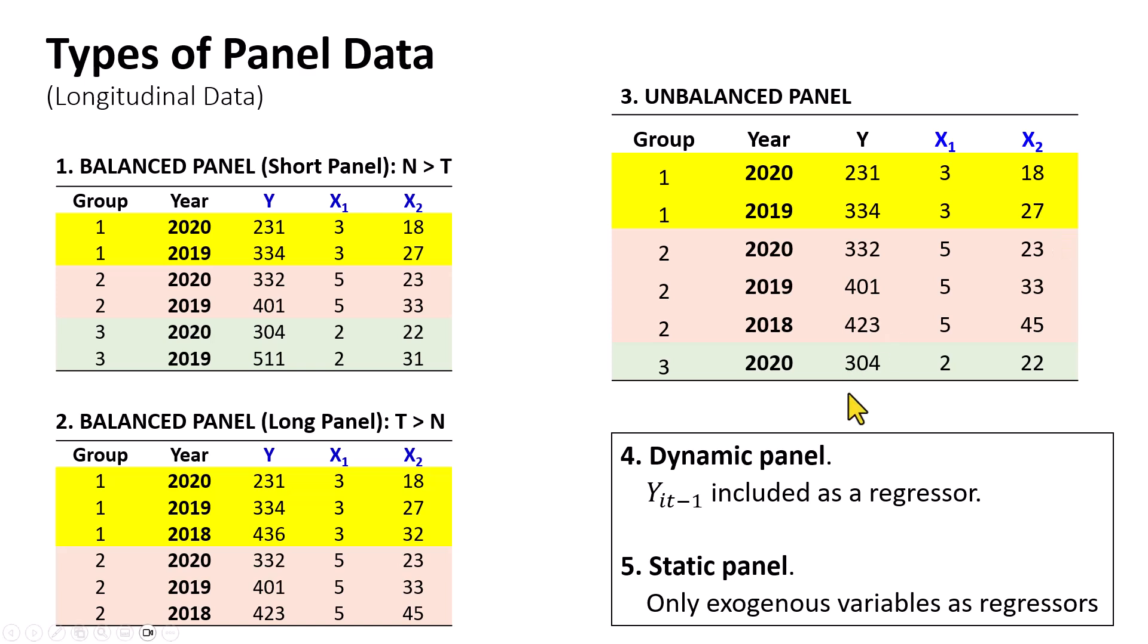The fourth example is a dynamic panel, the case where the lag dependent variable is included as a regressor. And that's going to be the case in the dynamic panel data GMM specification. The last one is a static panel, which specifies only exogenous variables as regressors.